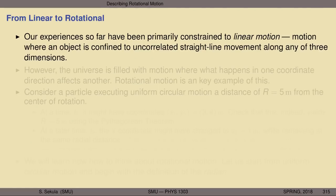Our experiences so far have been primarily constrained to linear motion — motion where an object is confined to uncorrelated straight line movement along any of three dimensions. We can move simultaneously in straight line motion along both X and Y, as in projectile motion. While we can relate what happens in X to what happens in Y through the commonality of time, it has never been the case — except in uniform circular motion — where motion in X dictated motion in Y and vice versa.